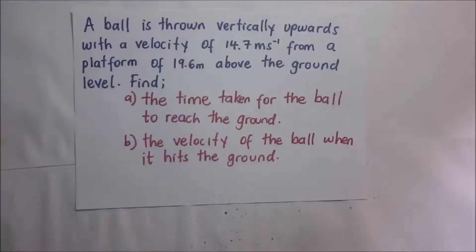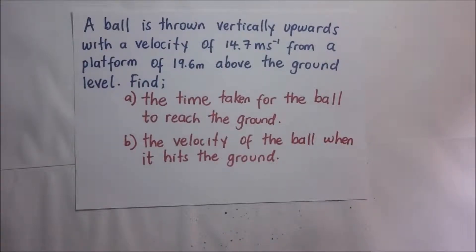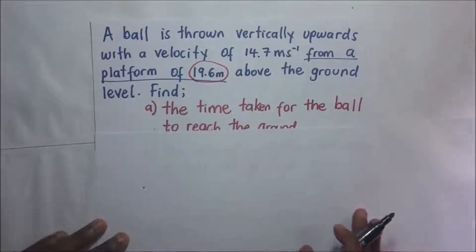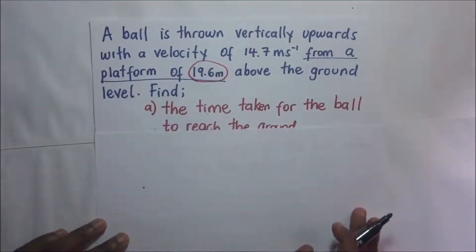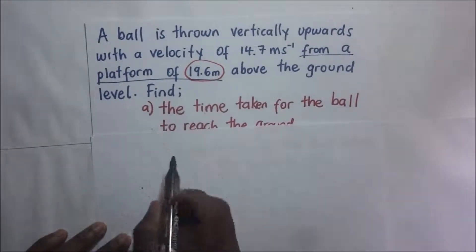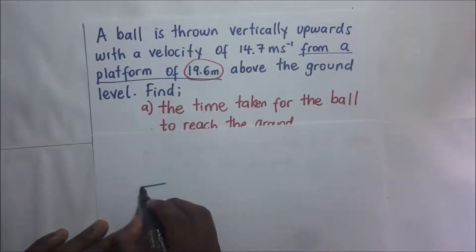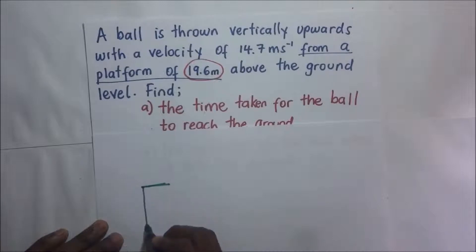A ball is thrown vertically upwards with a velocity of 14.7 meters per second from a platform 19.6 meters above the ground level. Find the time taken for the ball to reach the ground. We will summarize our question with a diagram. The ball is thrown vertically upwards from a platform — this is the platform right here.